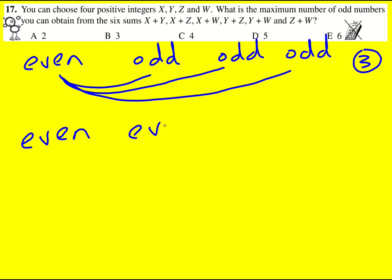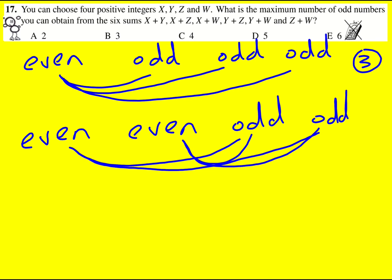What if two of them are even and two of them are odd? So now I could get an even-odd pair here and here, that would be two, and I can get another pair here and here, so actually it's going to be four.